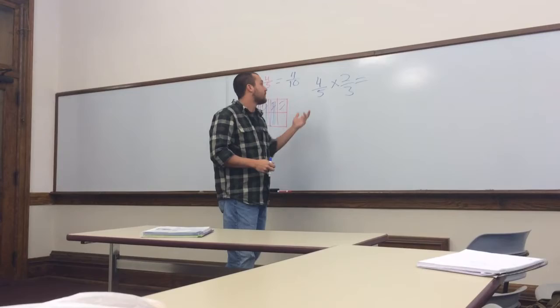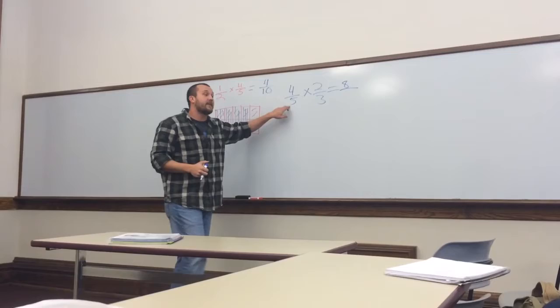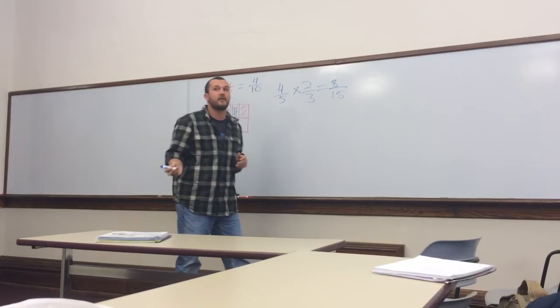Times 4, 4 times 2. Exactly, so we're going to multiply the tops. 4 times 2 is equal to what? 8. Very good. What would be our next step, Shelby? Multiply across the bottom. Exactly, and 5 times 3 is equal to what? 15. Very good.